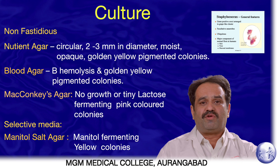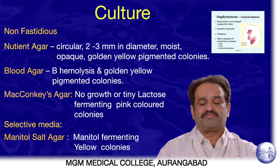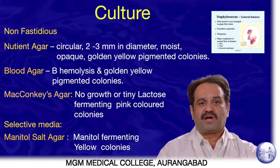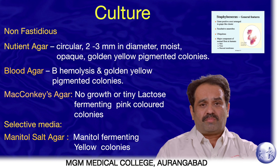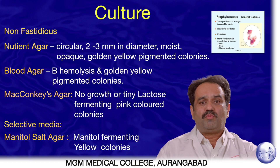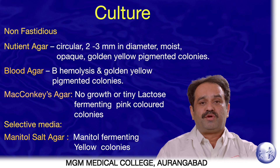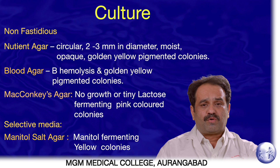Regarding cultural characteristics, Staphylococci is facultative aerobic, so it grows properly in aerobic conditions. It is non-fastidious, meaning it does not require enriched media for growth. On nutrient agar, colonies are small — about 2 to 3 mm in diameter — circular, opaque, buterous or moist, with a golden yellow pigment. On blood agar, it shows beta-type hemolysis and again shows golden yellow pigment. On MacConkey's agar, colonies are very tiny and lactose-fermenting pink in colour, but usually Staphylococci do not grow on MacConkey's agar.